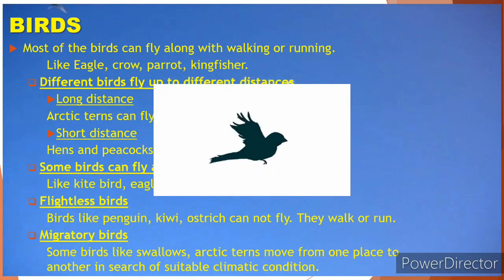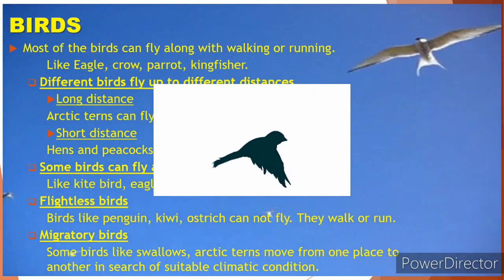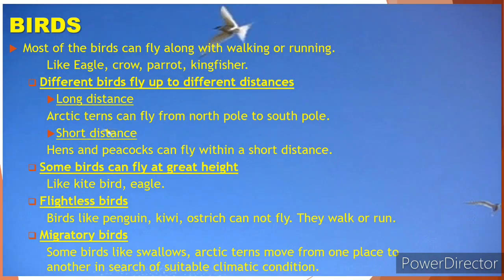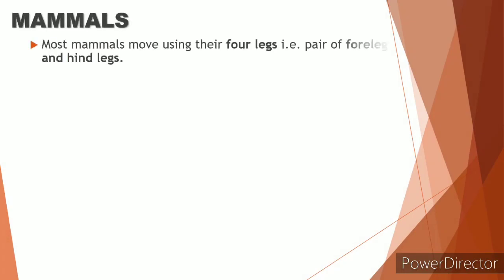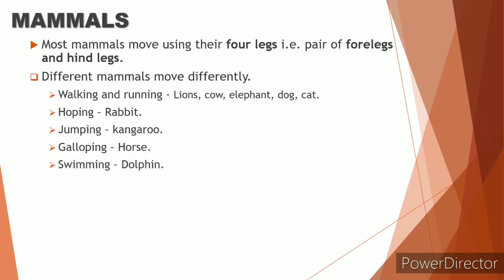There are flightless birds also — who are they? They are penguins, kiwis, and ostrich. They can run very fast but they cannot fly. And migratory birds like arctic terns fly from the south pole to the north pole.